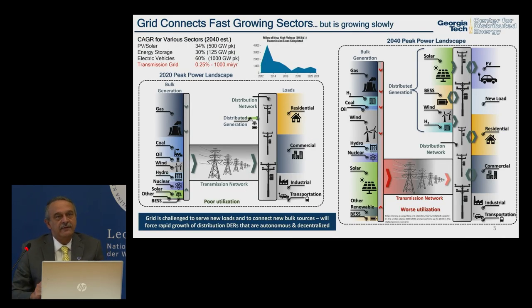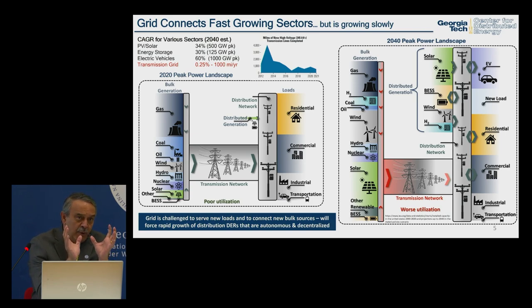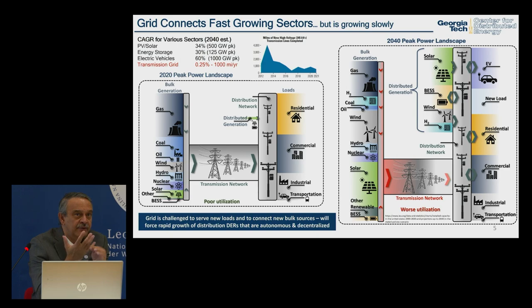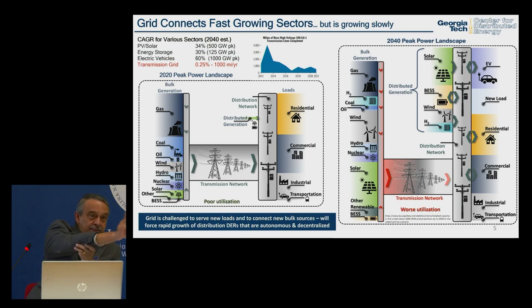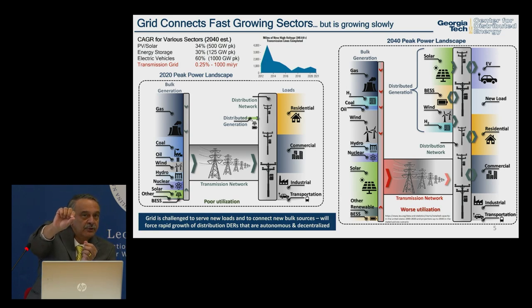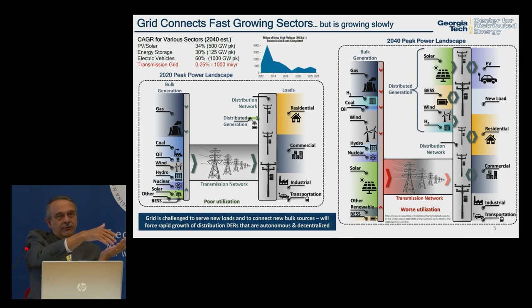PV solar is growing at about 34% year over year, energy storage at about 30%, and EVs at 60% — and they all connect to the grid, which is growing at 0.25%. Looking at bulk generation today versus 2040: by 2040 you've added another two thousand gigawatts of generation, plus all the new loads from transportation and electrification. There's no way to meet that from centralized sources alone.